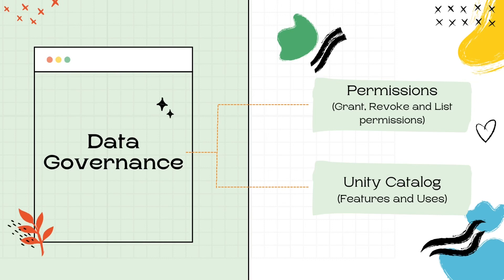Data Governance is the easiest of all the sections. Most questions are based on permissions — you could be asked to select the correct code block to grant certain permissions to a user or group, or to revoke permissions. If you are aware of permission granting and revoking, this would be an easy section. A question or two from the Unity Catalog can also appear here, so you should know the basic uses and features of the Unity Catalog.